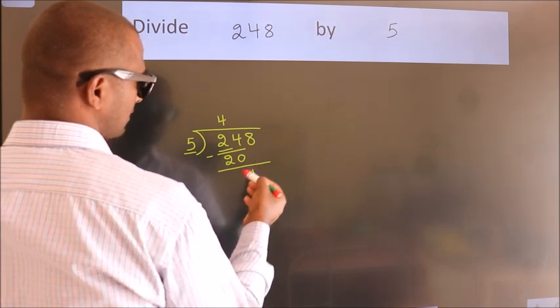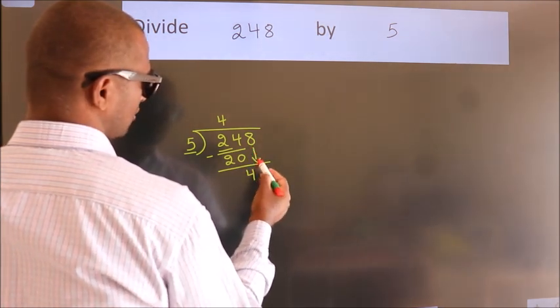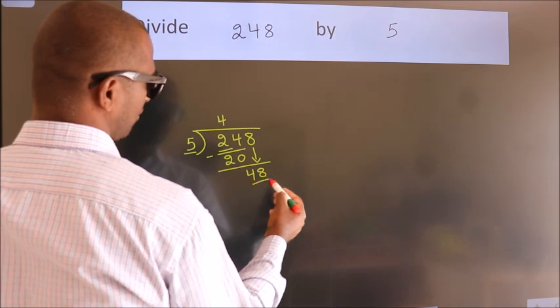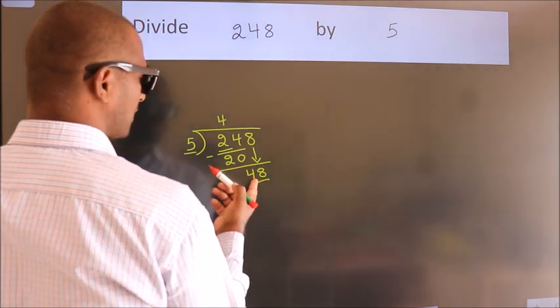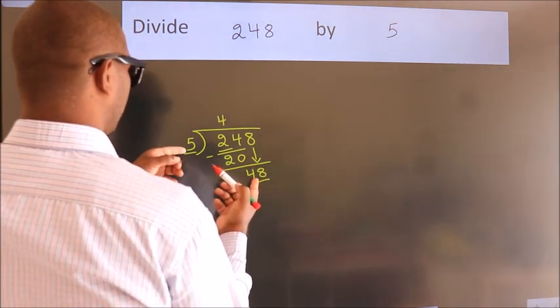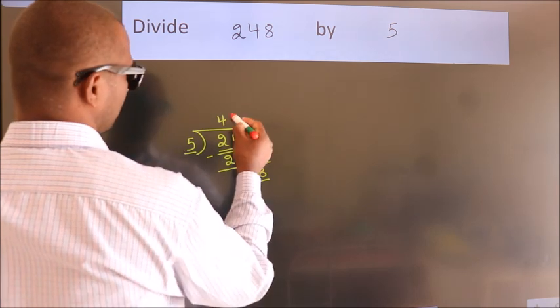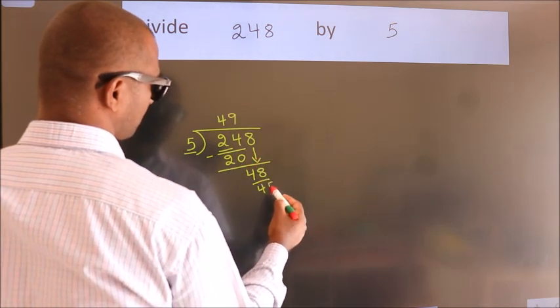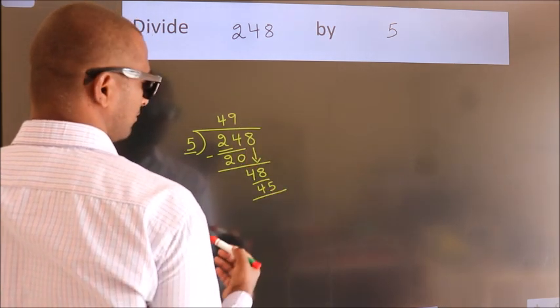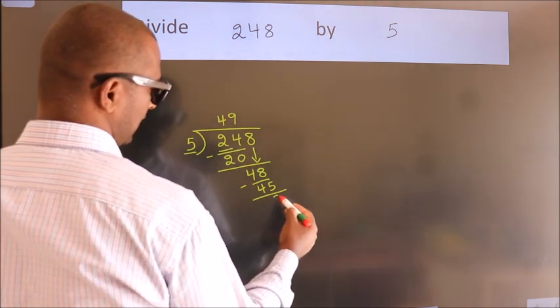After this, bring down the next number. So 8 down, so 48. A number close to 48 in the 5 table is 5 times 9 is 45. Now we subtract. We get 3.